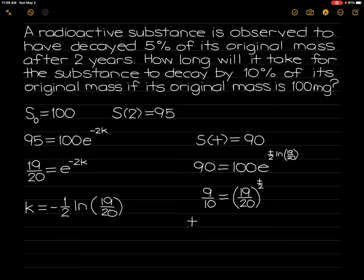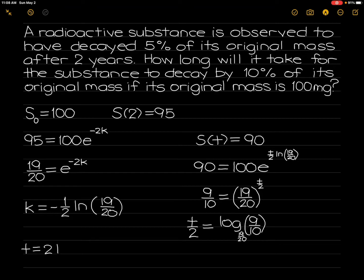So, t over 2 is equal to the logarithm of 9 over 10 with base 19 over 20. Therefore, t is equal to 2 times the ln of 9 over 10 with base 19 over 20, and the answer is 4.11 years.